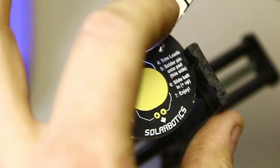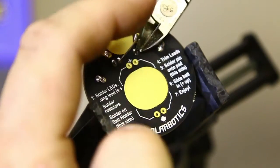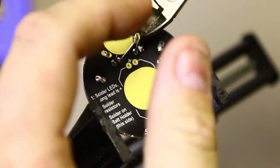Once again, trim the leads. Although you're wearing your safety glasses, it's still best to put a finger over top of the lead that you're trimming, so that it doesn't go flying.